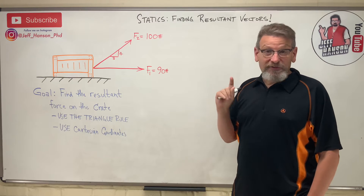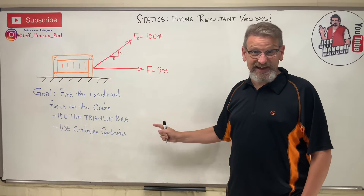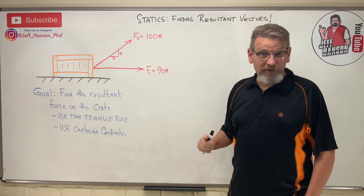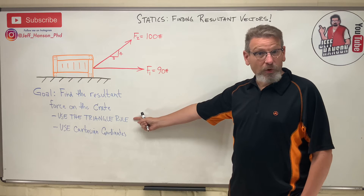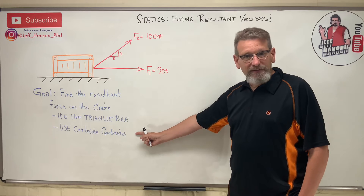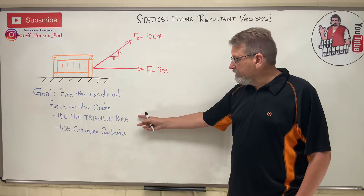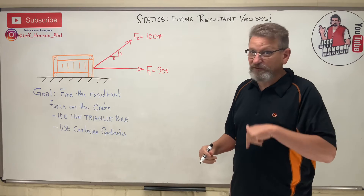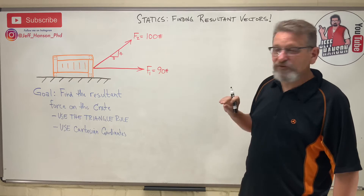We should work it both ways, but we should get the exact same answer. It's going to be in different forms — method one gives polar coordinate form, and method two gives Cartesian ijk form — but we can convert back and forth to verify they match. Let's find the resultant using the triangle rule first.